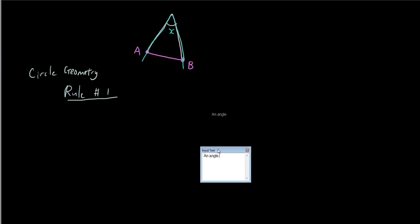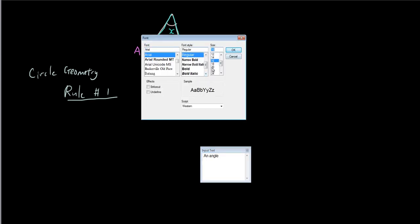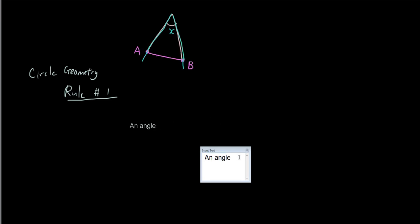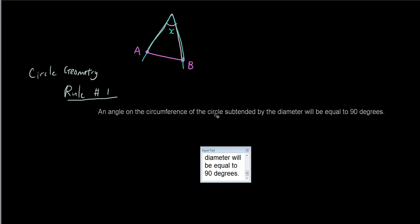An angle on the circumference of the circle subtended by the diameter will be equal to 90 degrees. That's our first rule. An angle on the circumference of the circle subtended by the diameter will be equal to 90 degrees. So let's test that out in GeoGebra.